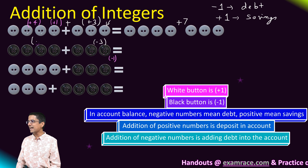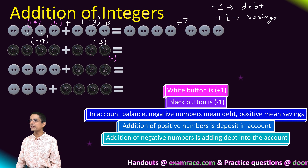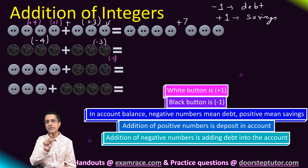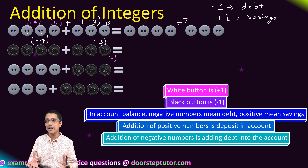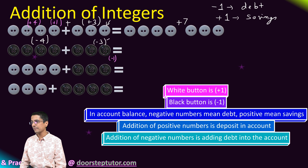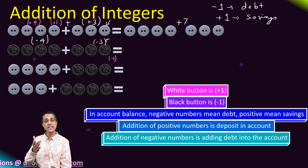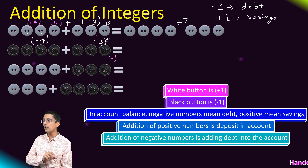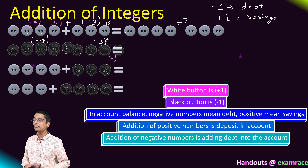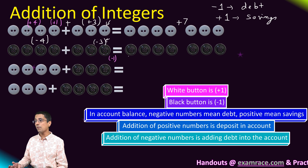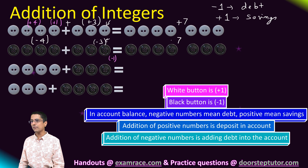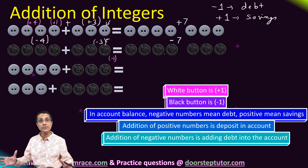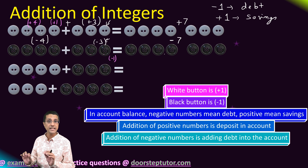Case two: I had a debt of four rupees, denoted by minus four. I accrued an additional debt of three rupees — again a minus. I am taking on more debt on top of existing debt. My total debt increases to four plus three, which is seven, and we write minus seven because it is debt, not net balance.